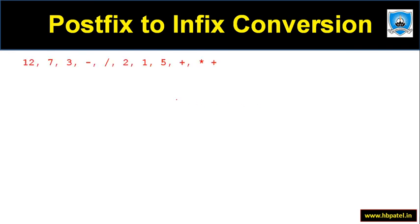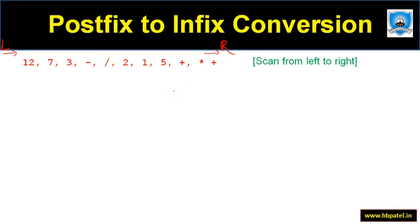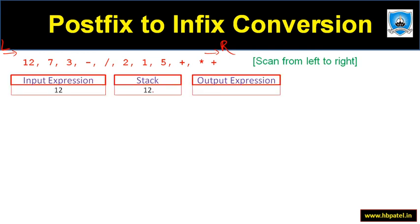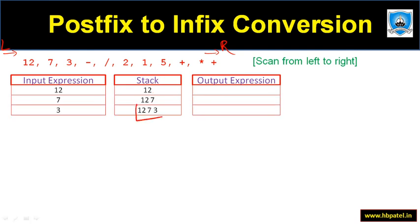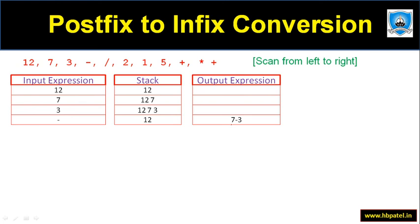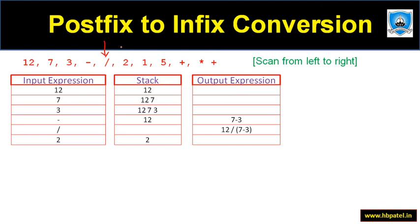Let's take one more example to make things clearer. This is a postfix expression — I've added commas just for clarity, but they aren't required. Reading from left to right: we push 12, then 7, then 3 onto the stack. Then minus appears — we pop the top two, giving '7 - 3'. Then division appears — we pop 12, giving '12 / (7 - 3)'.